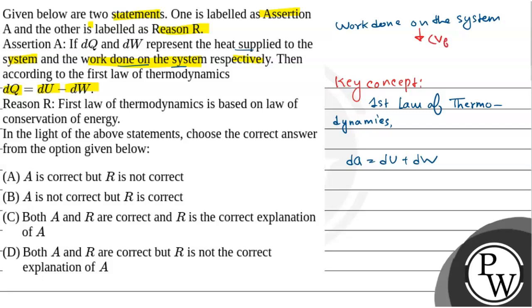So volume final is less than volume initial. That's why work done equals P into VF minus VI. So VF is less than VI. That means work done is negative.